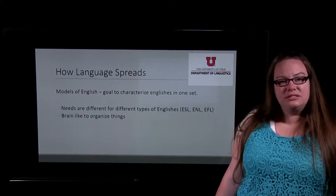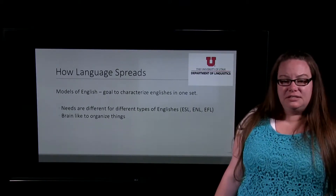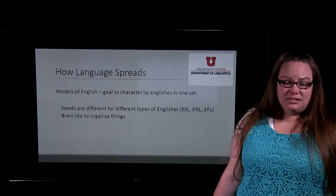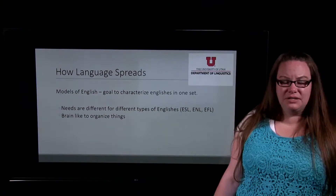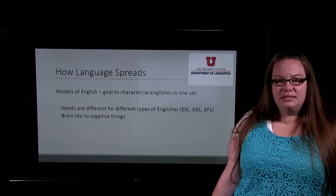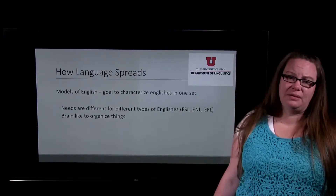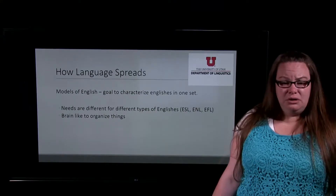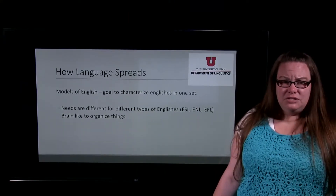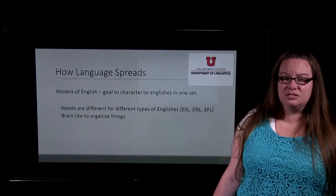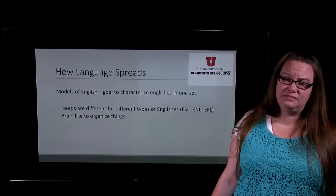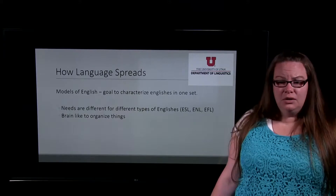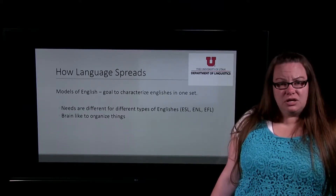Our book talks about some models of English. The goal of a model is to characterize the different types of Englishes that exist in the world in one set. Our brains like to organize things, so that as we're talking about them, we can understand what the differences and similarities are. As we proceed toward goals like helping with English instruction, it's important to understand that the needs of different groups are very different — whether someone is learning in an ESL or EFL setting changes the way we do instruction.